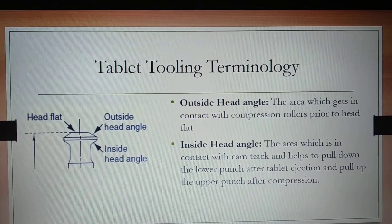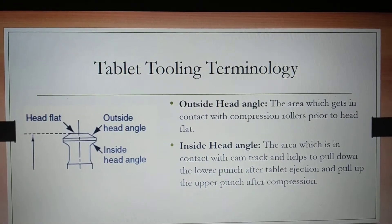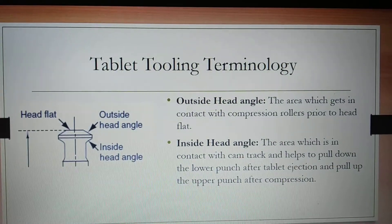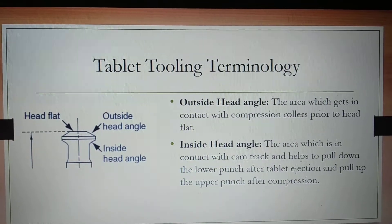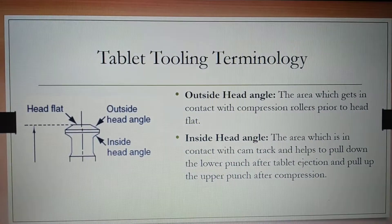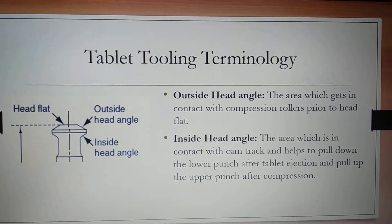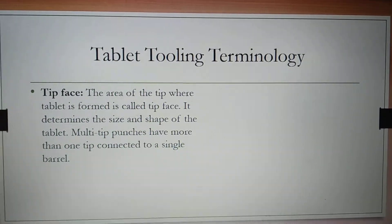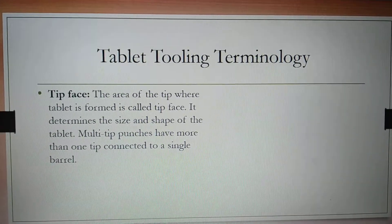Next one is outside head angle — the area which gets in contact with compression rollers prior to head flat is called outside head angle. Whereas the inside head angle is the area which is in contact with the cam track on the opposite side of the outside head angle, and this helps to pull down the lower punch after tablet ejection and pull up the upper punch after compression.